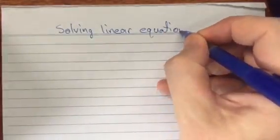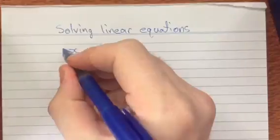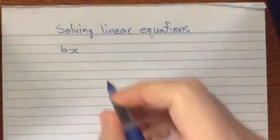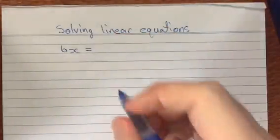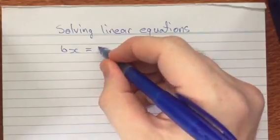And that is where we've got a variable, let's call it x, multiplied by some other constant. I'm going to pick 6 here. And on the right hand side it's going to be equal to, let's say, 48.